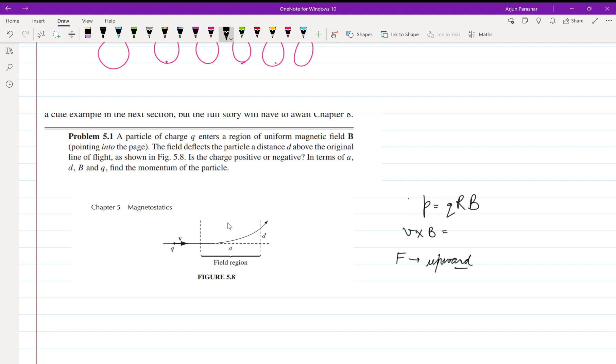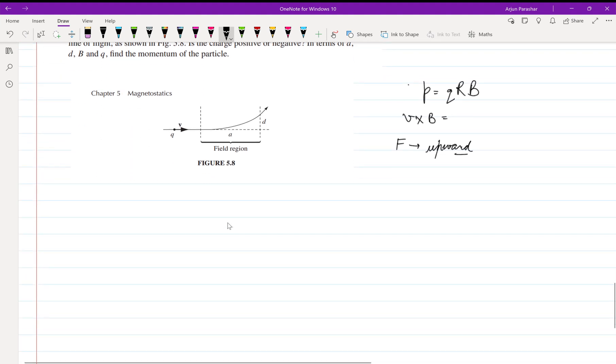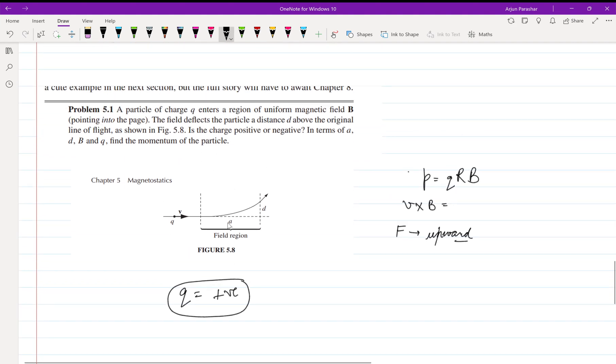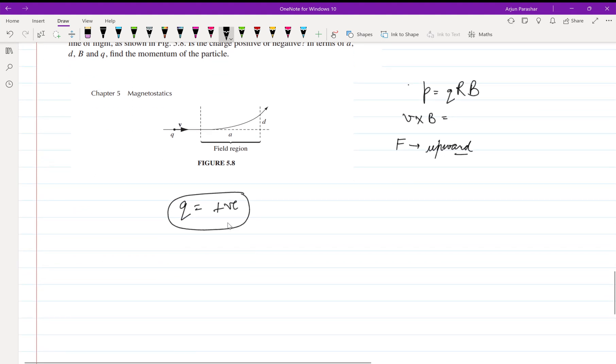So this is the case when charge is positive when the force is upward. We calculated by the left-hand thumb rule. So q is positive here. Then comes the question that we have to write the momentum in terms of a, d, B, and q.